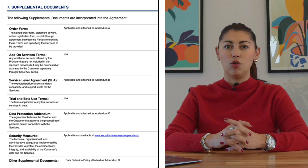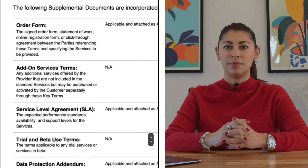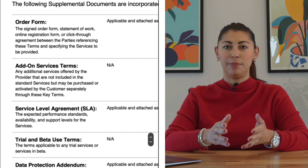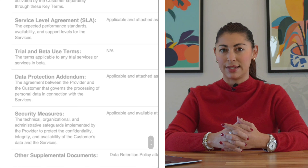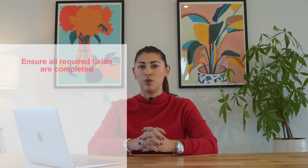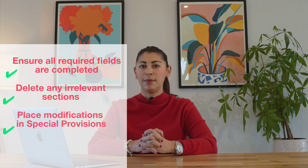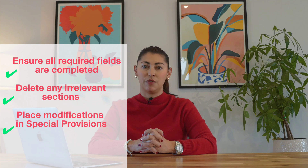Next is supplemental documents, which should only be included if required. Incorporate any additional documents, addendums, or policies as needed. If you need an SLA or DPA, remember you may use one SLA or one DPA, which are both fully interoperable with 1SAS. Before executing, review all sections carefully to ensure all required fields are completed. If you're using your own order form, make sure you've indicated where fields are covered. Delete any irrelevant sections to keep the document streamlined, and ensure that any modifications are placed in the special provisions section.